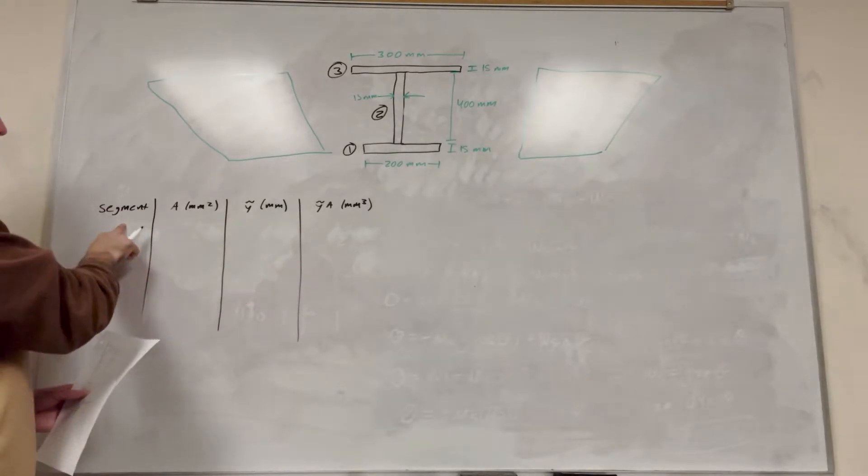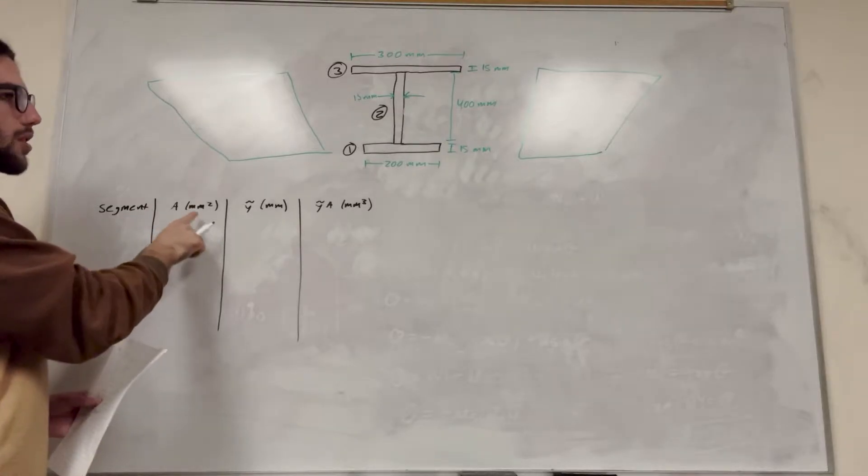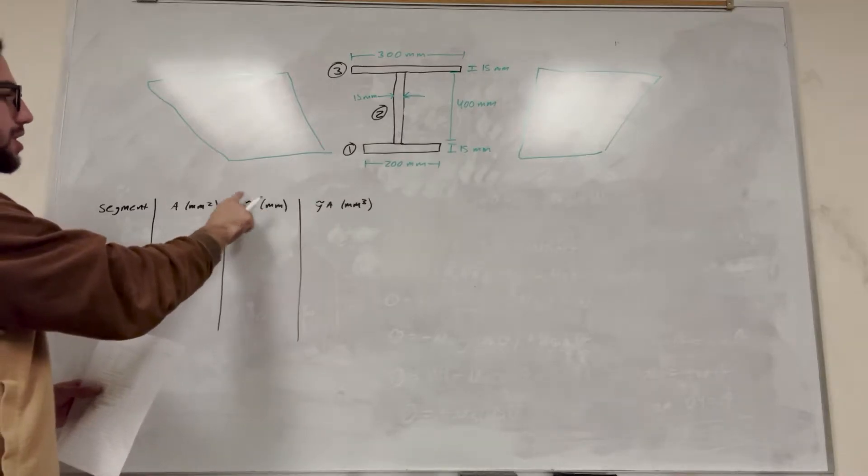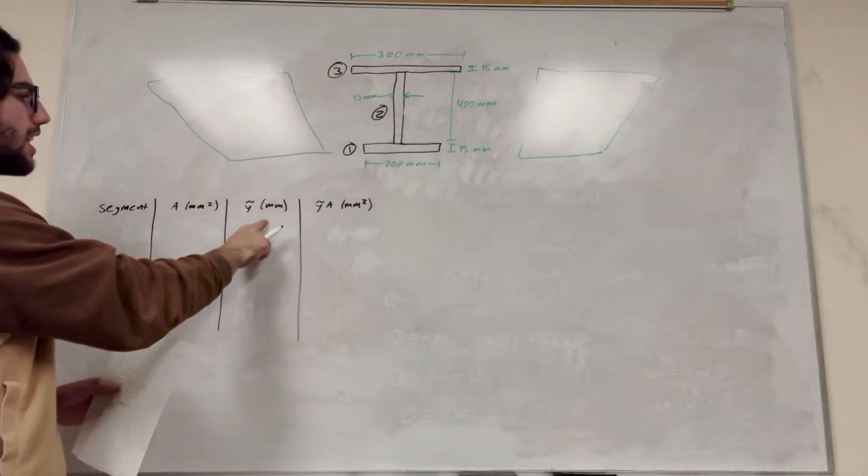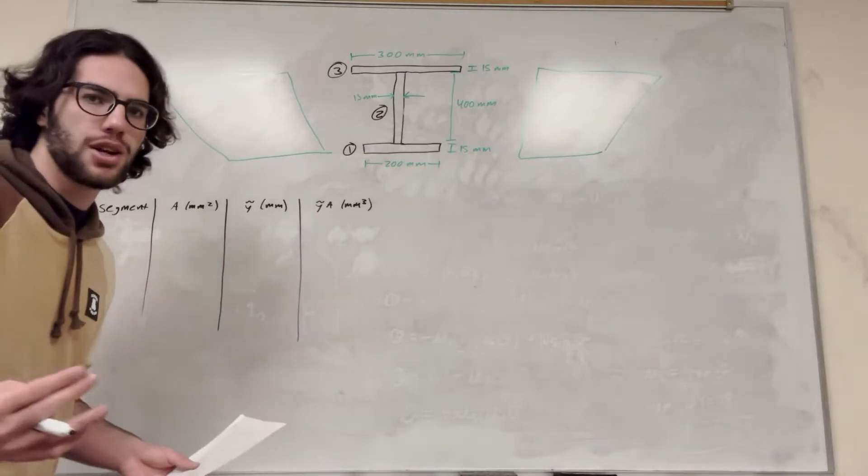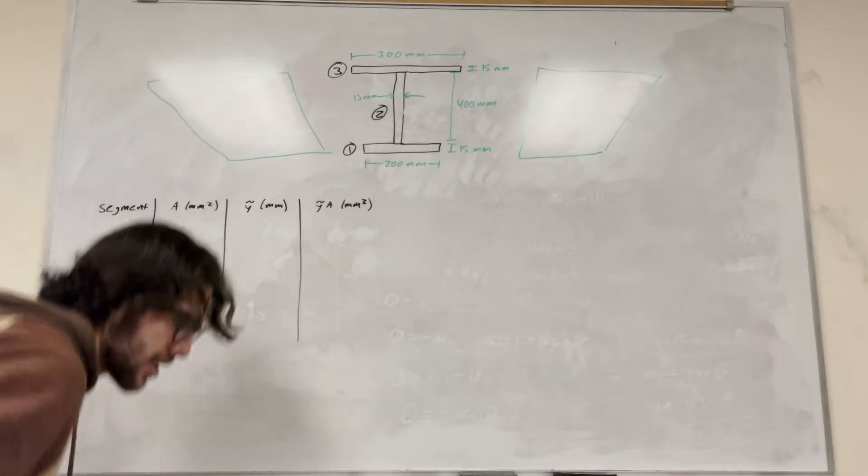So this chart, you always want to have segment, area, or volume, or length, depending on what kind of shape you have, and then the center of mass. So this is the center of mass of each segment, and then we're going to multiply area times the center mass of the segment, and that's going to help us plug it into our formula at the end. So let's get started on this.